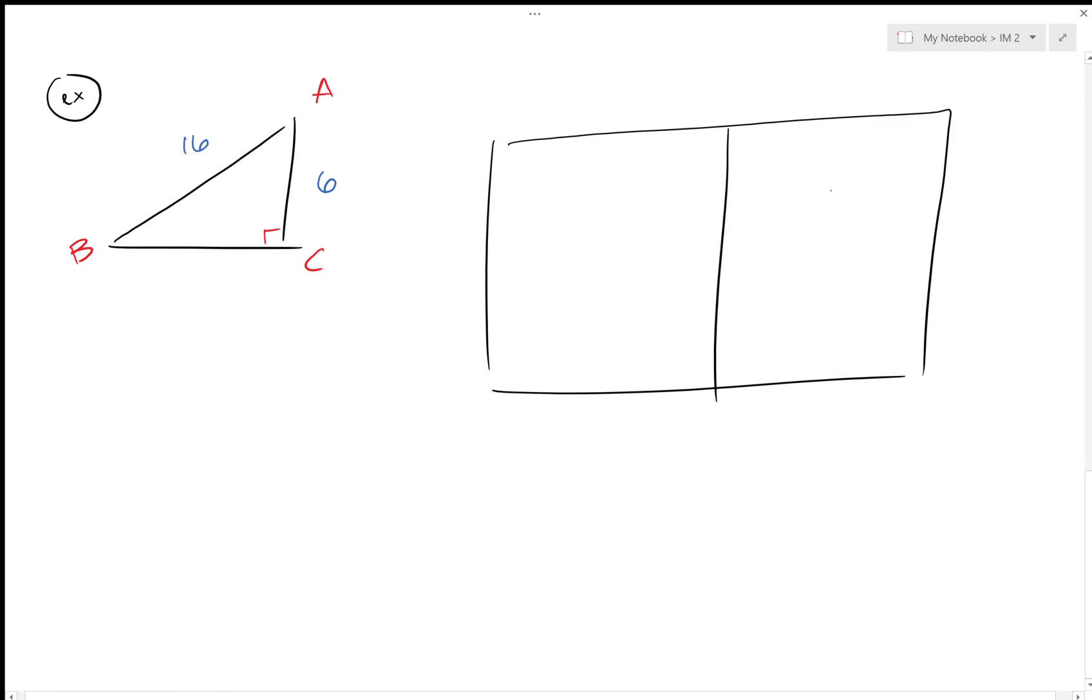16 and 6. So again, same kind of setup for the table. Angle—I need to find three sides and three angles. Angle A, angle B, angle C, side AB, side BC, side CA.